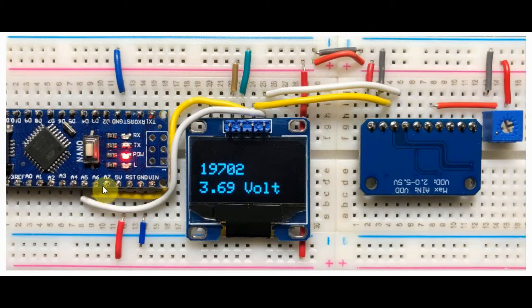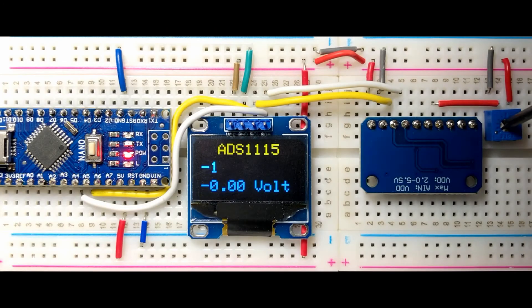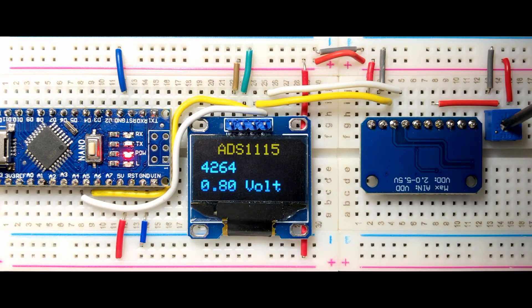This integer value, 16-bit integer value, is then displayed on this OLED screen, and we also display the equivalent voltage. And now for a quick demonstration of the ADS-1115 analog-to-digital converter.